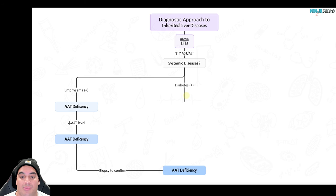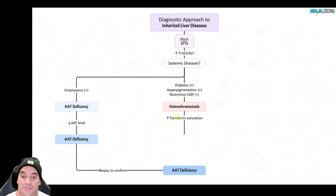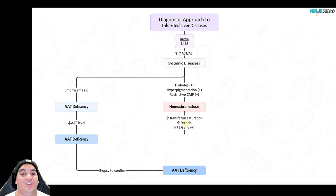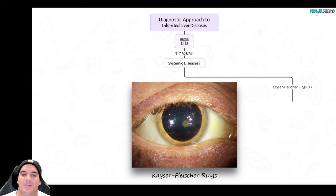If a patient also presents with diabetes, hyperpigmentation, and restrictive cardiomyopathy with LFT elevation, think hemochromatosis. Send off a transferrin saturation — if elevated, iron is heavily bound to transferrin in the bloodstream. If ferritin levels are elevated, there's a lot of iron bound to ferritin in the cells. If the HFE gene test is positive, that creates a strong degree of suspicion for primary hemochromatosis, though a biopsy is needed to completely confirm.